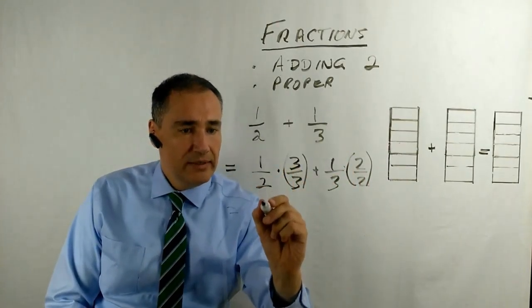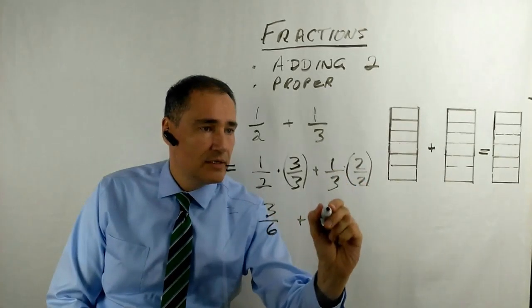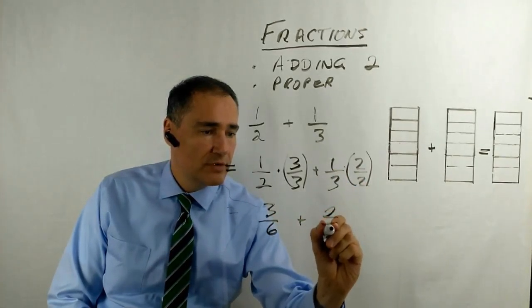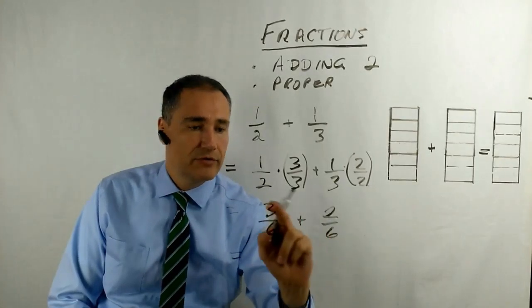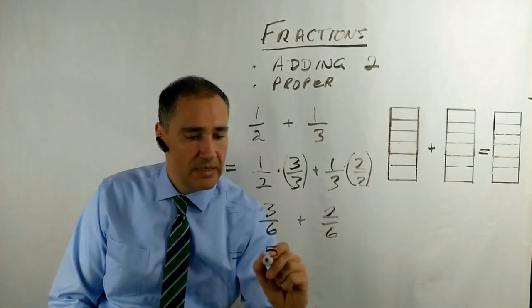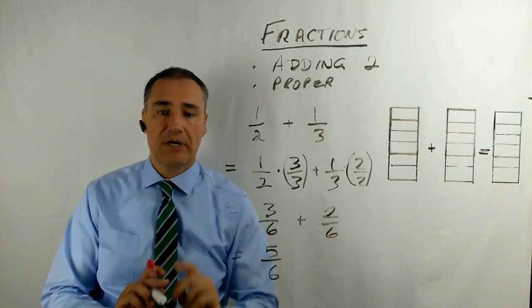So now we get 3 over 6 plus 2 over 6. And now we can add these together because they have a common denominator. So 3 plus 2 is 5, and the common denominator is 6. There's your answer numerically.